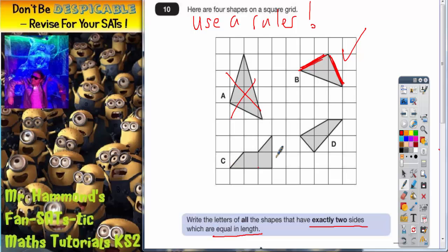Shape C you should find that this side and this side, the two slanted lengths which are both one square diagonally, they are indeed equal. So that shape we are interested in.